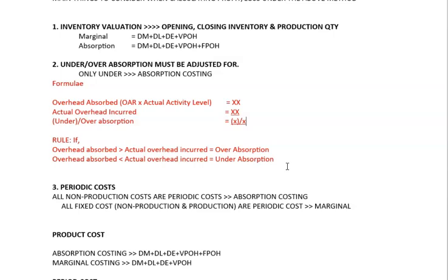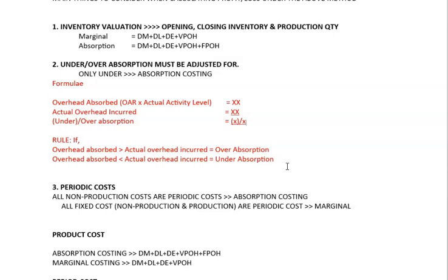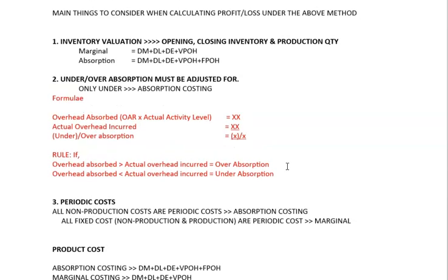The second rule is you have to calculate under or over absorption and adjust it. This applies only under the absorption costing method. The formula is: overhead absorbed minus actual overhead incurred equals the under or over absorption. If overhead absorbed is greater than actual overhead incurred, the result is over absorption.